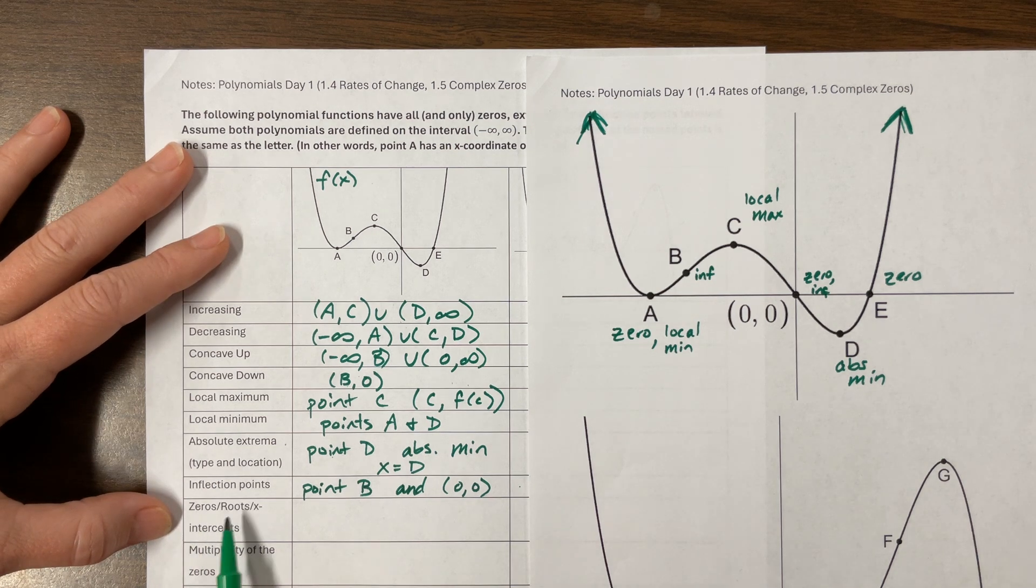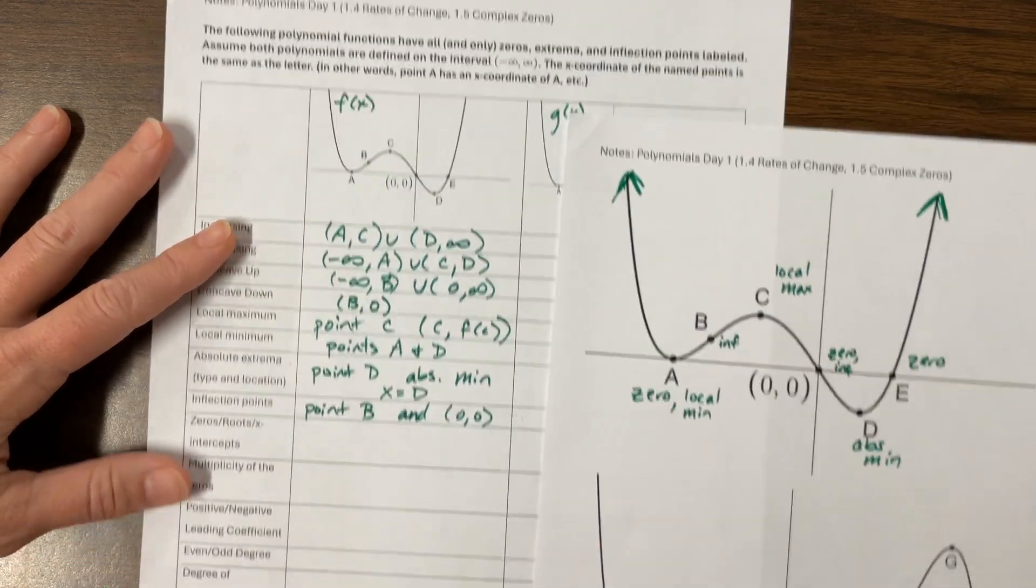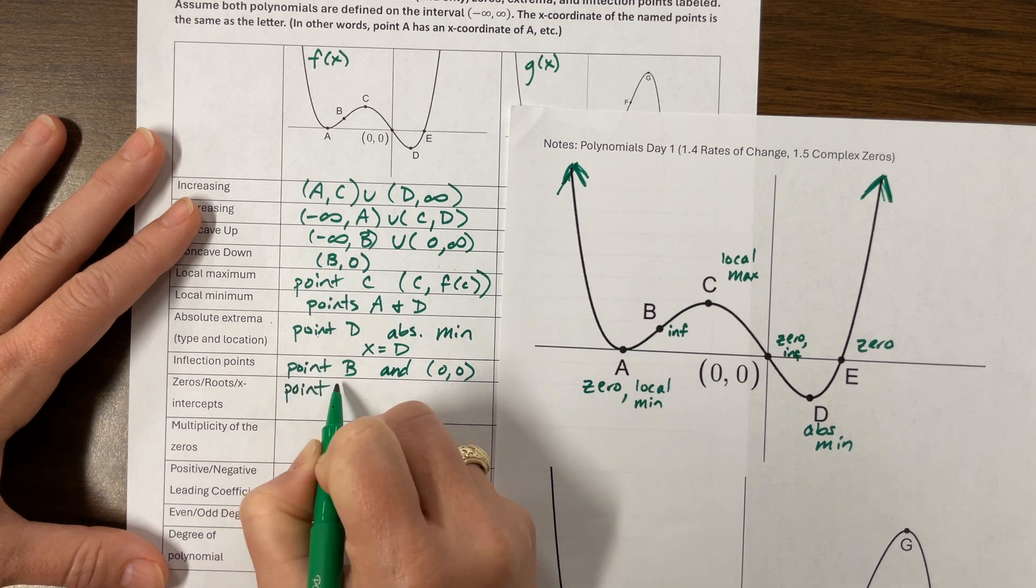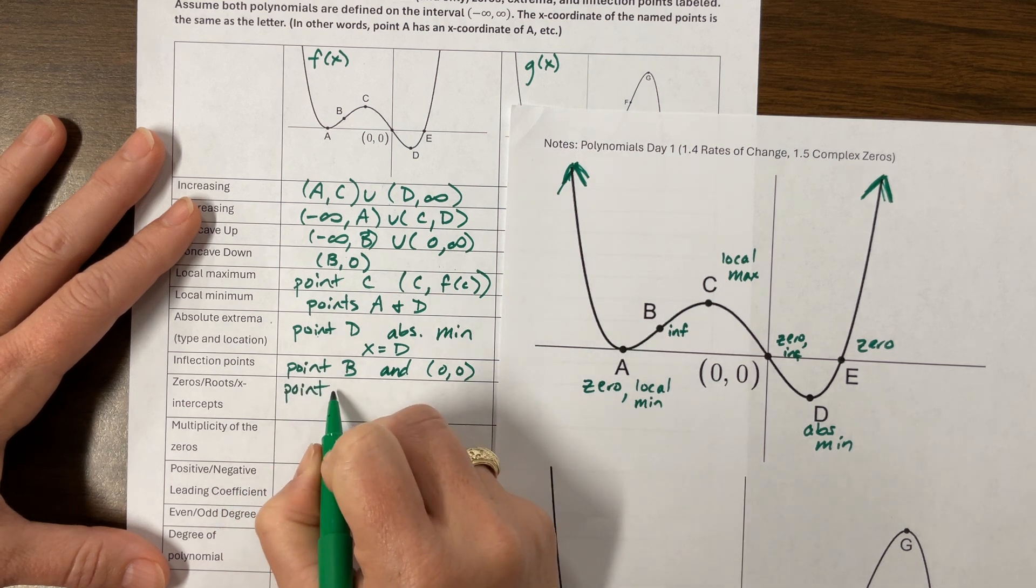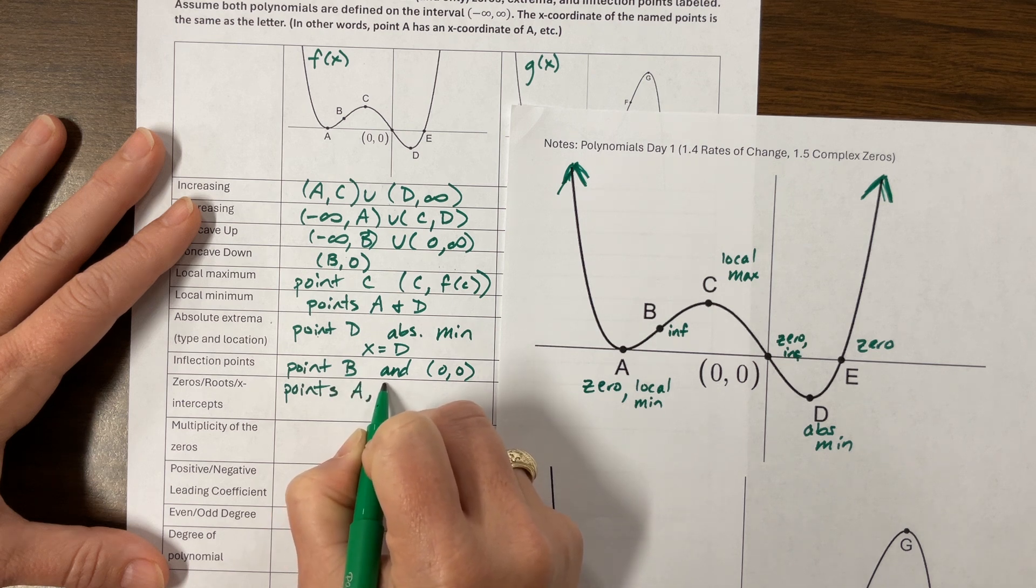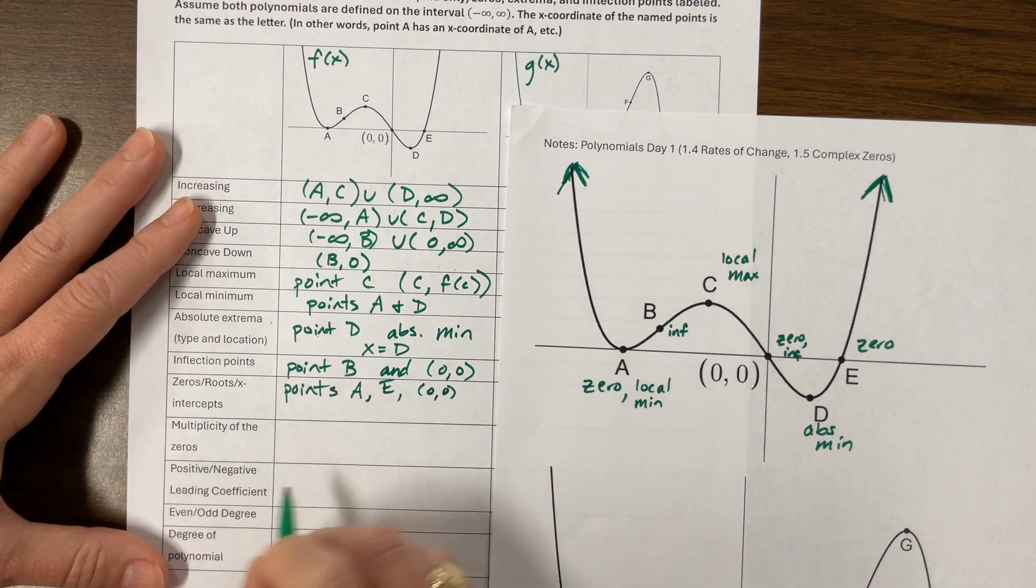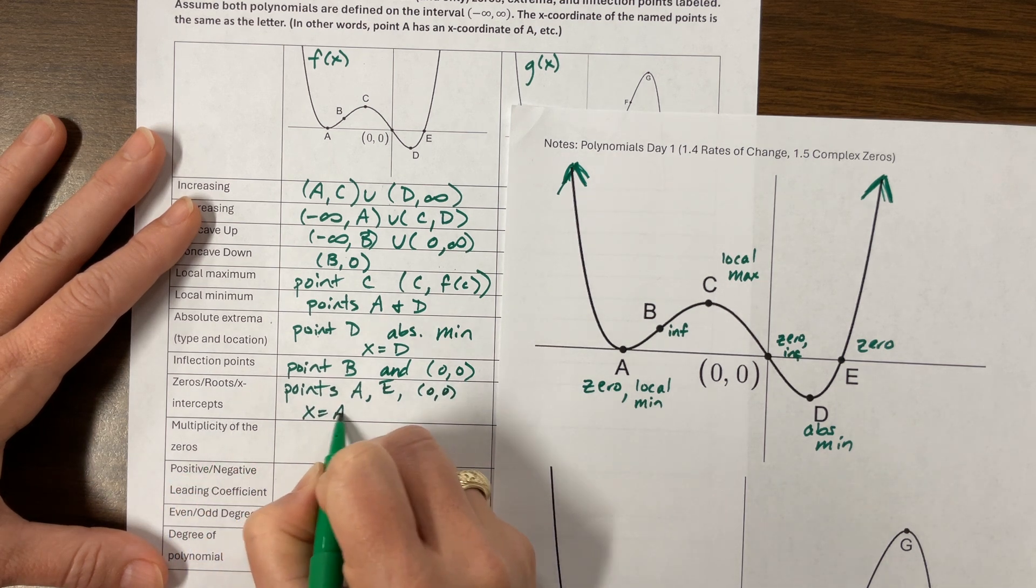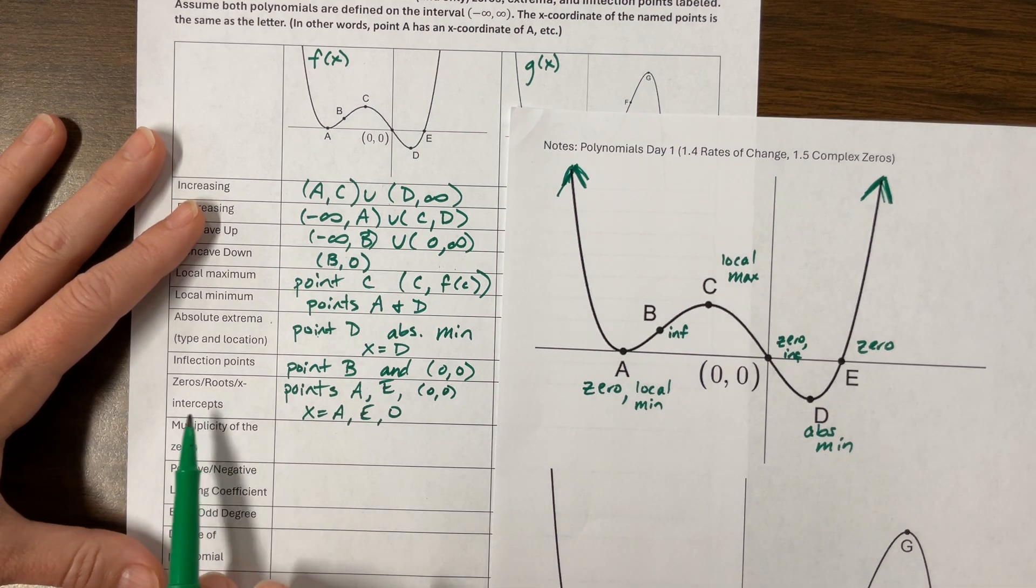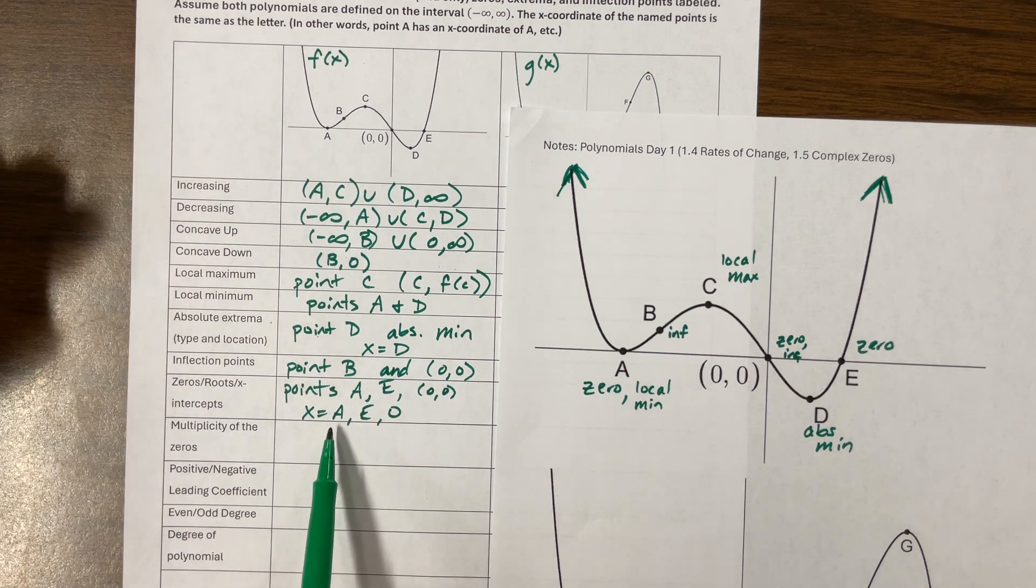Inflection points, I had an inflection point at point B and at the point (0,0). My roots, my zeros, my X intercepts - hopefully you realize that those are all the same thing. So what I'm saying here is the points are at points A, at point E, and it's at the ordered pair (0,0). But maybe when it says X intercepts, it's when X is equal to A, to E, or to 0. I guess I should put 0 in the middle, but there we go. X intercepts, usually you would describe them as X coordinates.